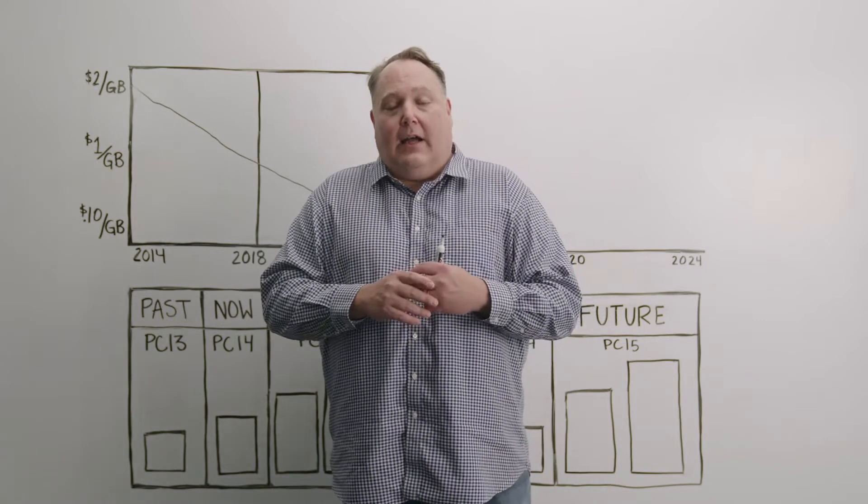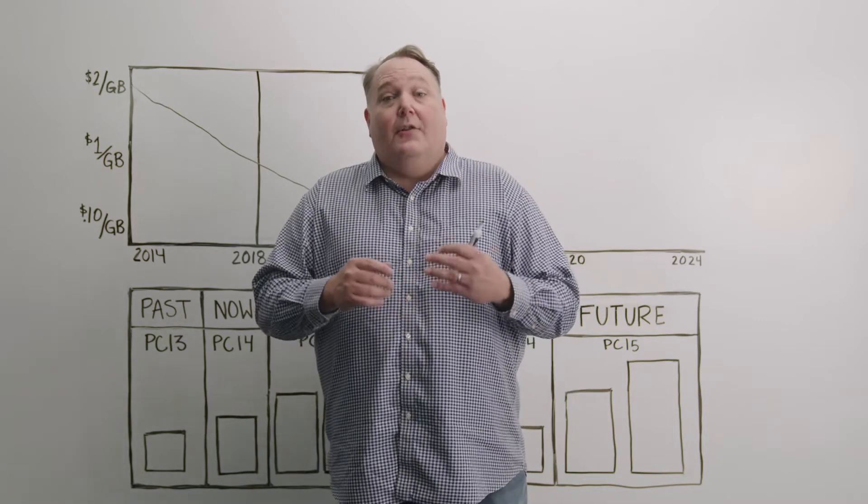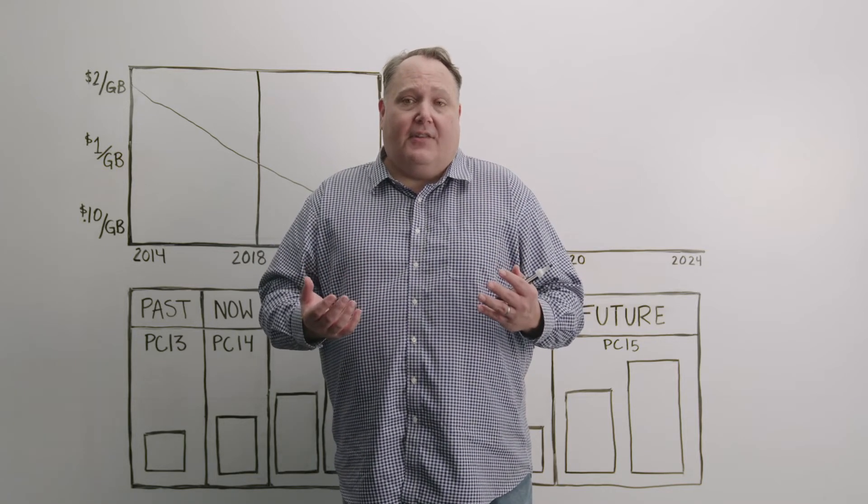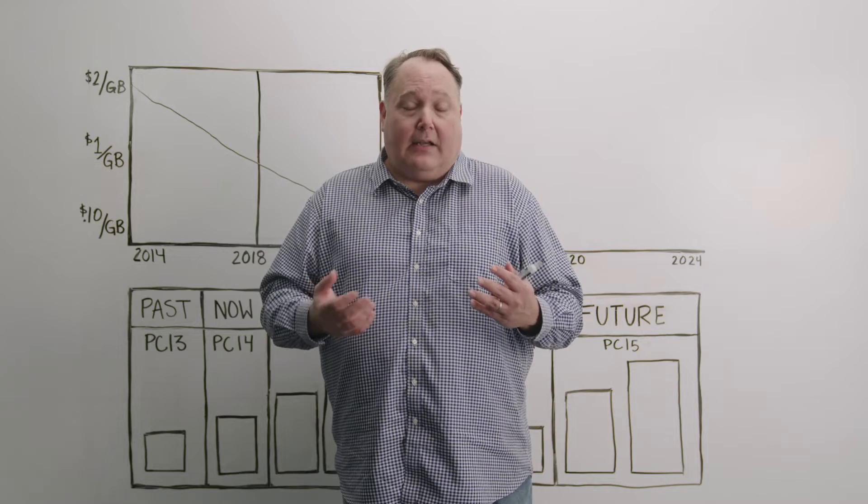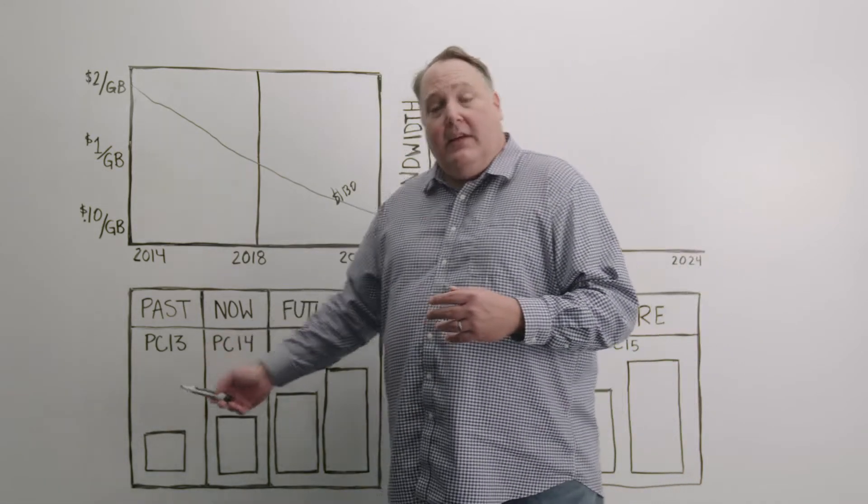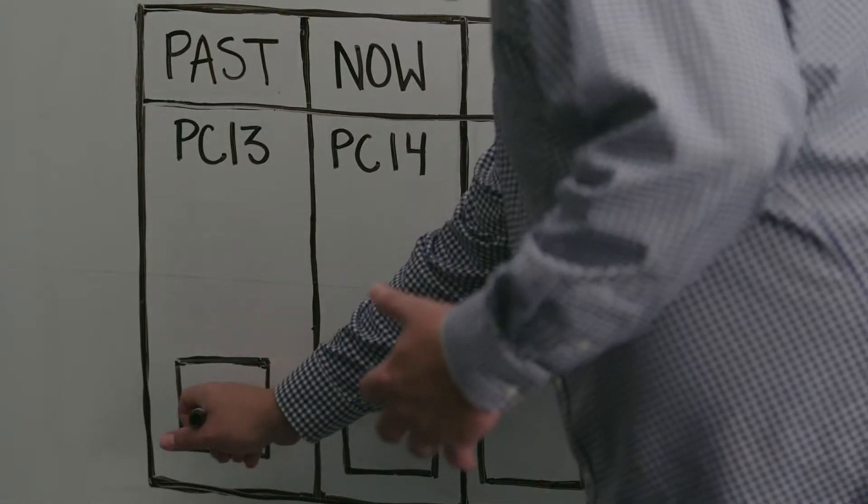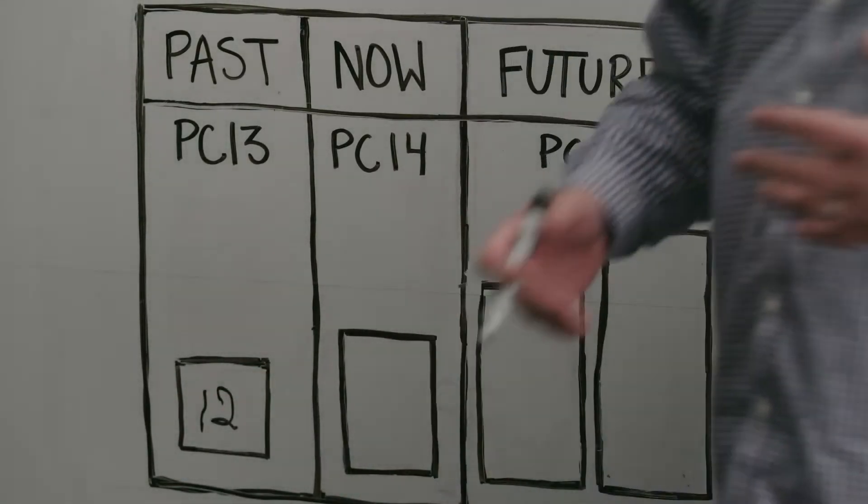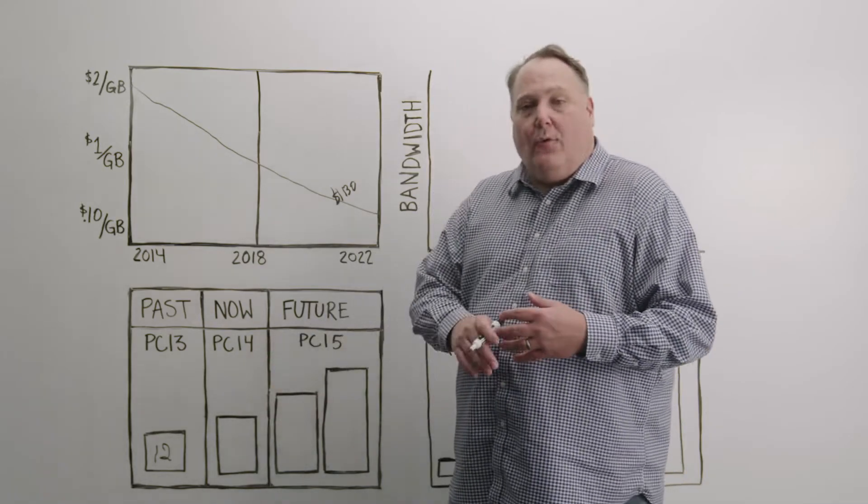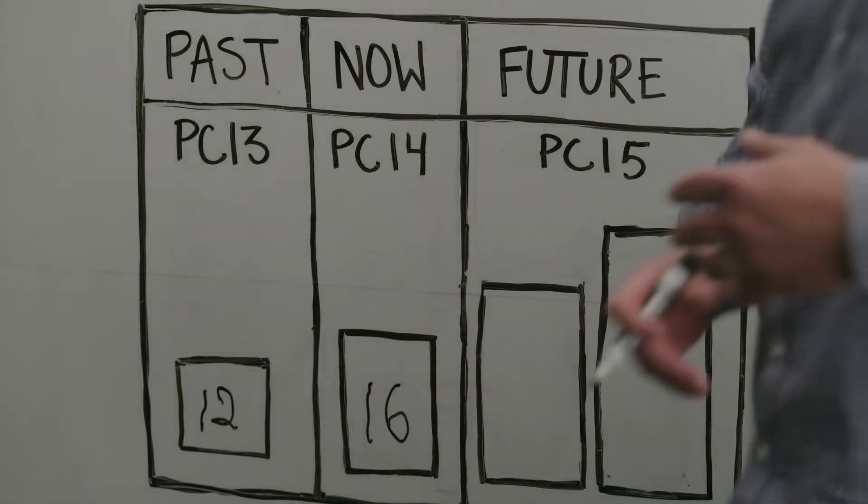The second dimension on which we've seen technological advancements has been in the PCI bus. We've been increasing the number of devices that we're able to put on a CPU. With PCI 3 and the Cascade Lake architecture, we were able to put 12 drives per processor. With Ice Lake and PCI 4, this moved to 16 drives on an Ice Lake platform.